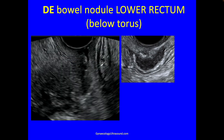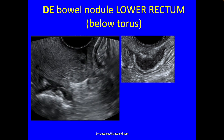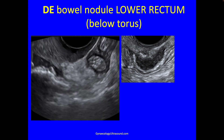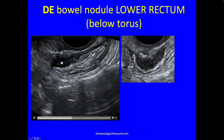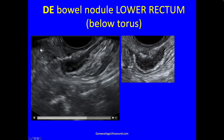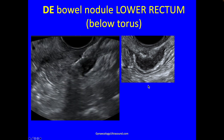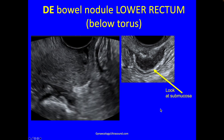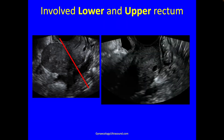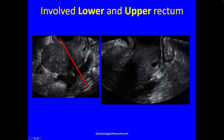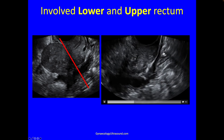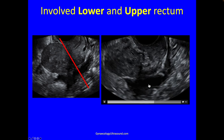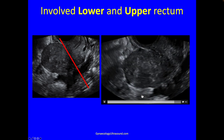Then you can determine where in the bowel the nodule is. This one is in the lower rectum — we're below the level of the torus. You can track muscularis there and almost immediately there's this nodule; we're nowhere near the internal os. The line through the internal os to the torus — point of attachment of the uterosacral ligaments — defines lower rectum versus upper rectum. In this video clip you can track muscularis as you enter the vagina, and then there's this big plaque that goes right across the level of the torus.